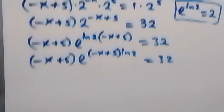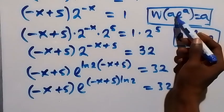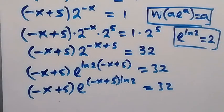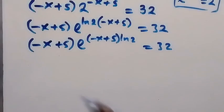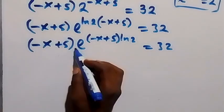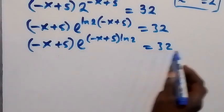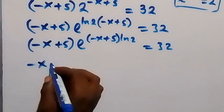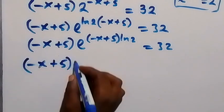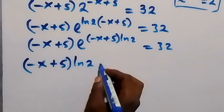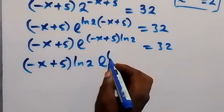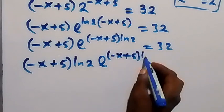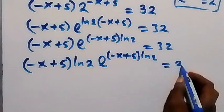From the W Lambert function, the coefficient and the power of the exponent must be the same. That means we need to multiply both sides by ln 2. So this becomes minus x plus 5 times ln 2, times exponent of bracket minus x plus 5 times ln 2, which equals 32 times ln 2.